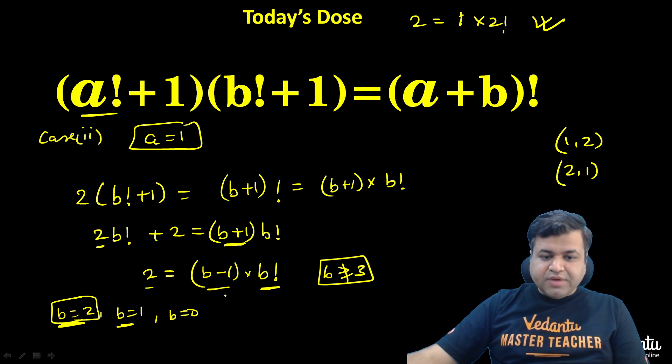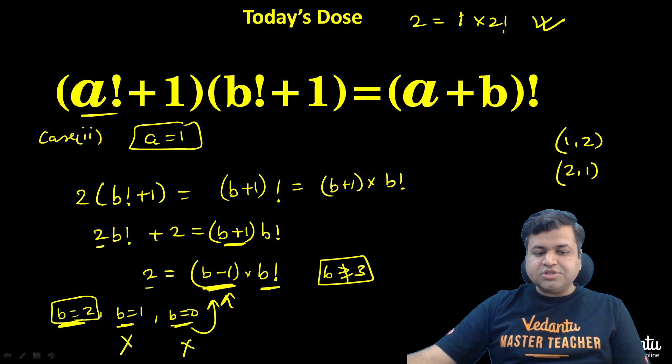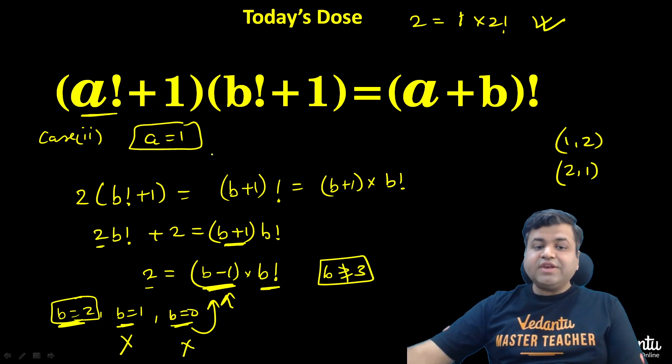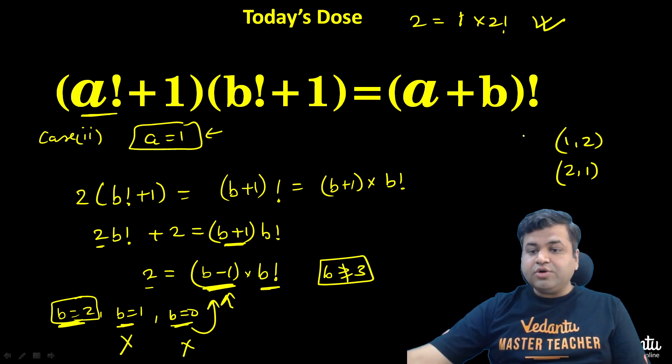Now let's consider b equals 1. If b equals 1, this is 0, so 2 equals 0 times something, not possible. If b is 0, then this will be negative. Again, not possible. So the only solution when a is 1 is 1 comma 2, and hence the symmetrical solution is 2 comma 1.